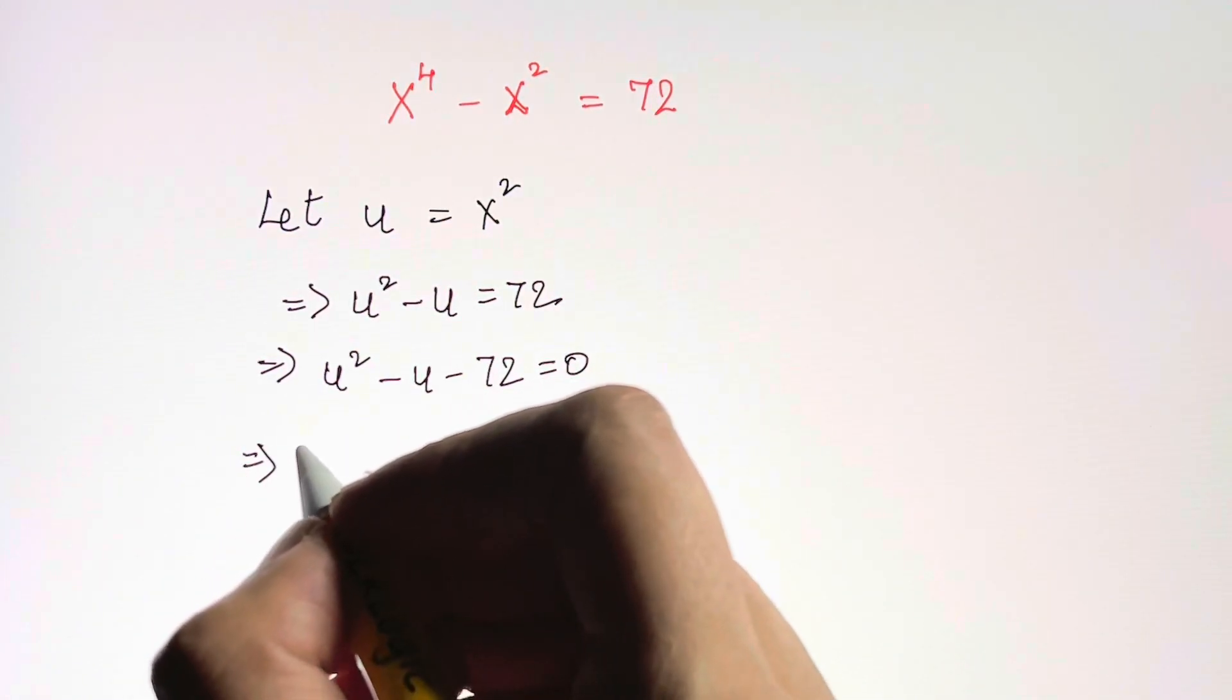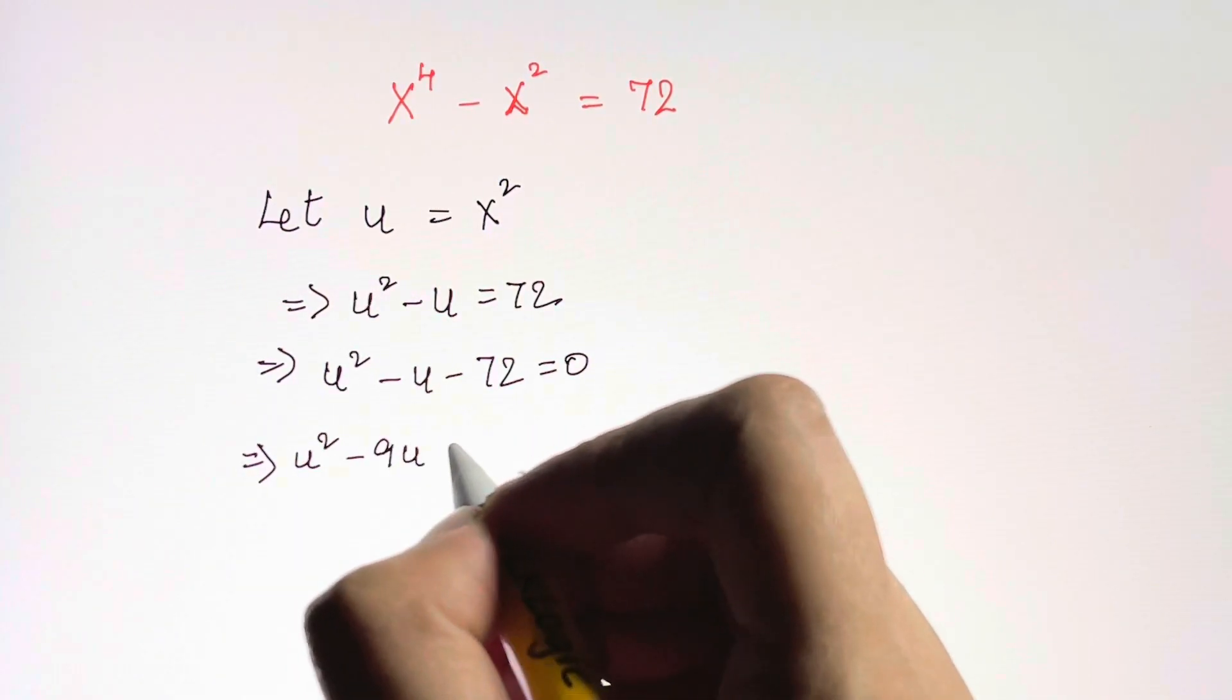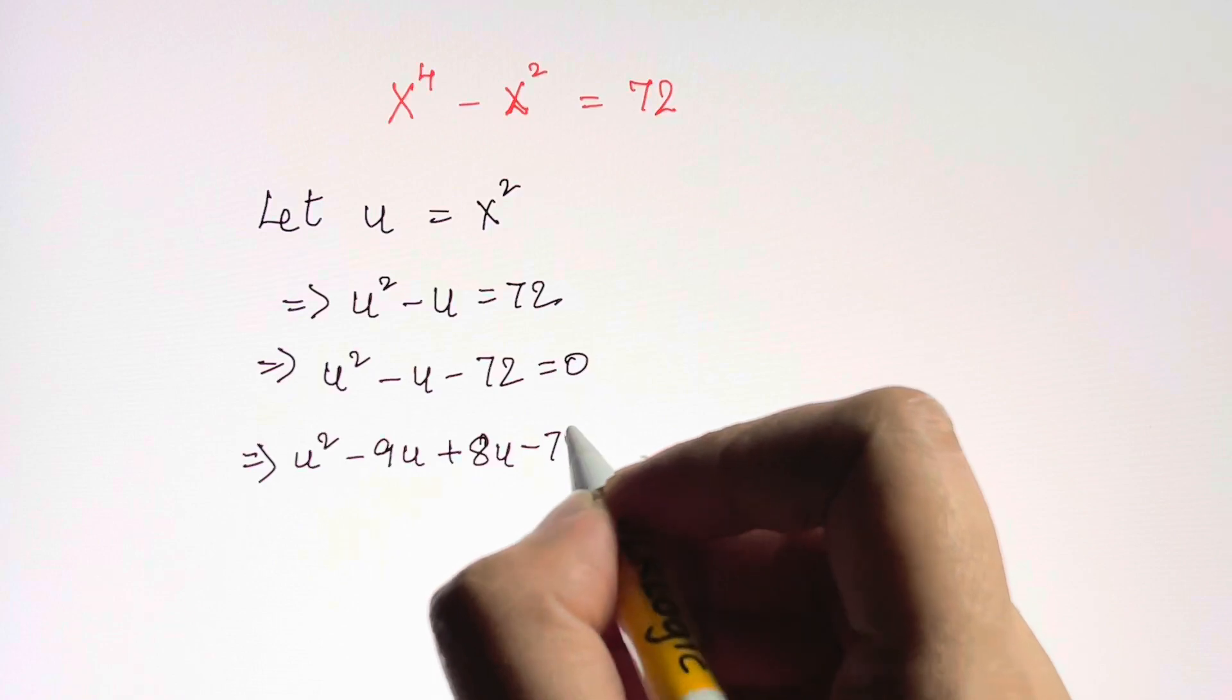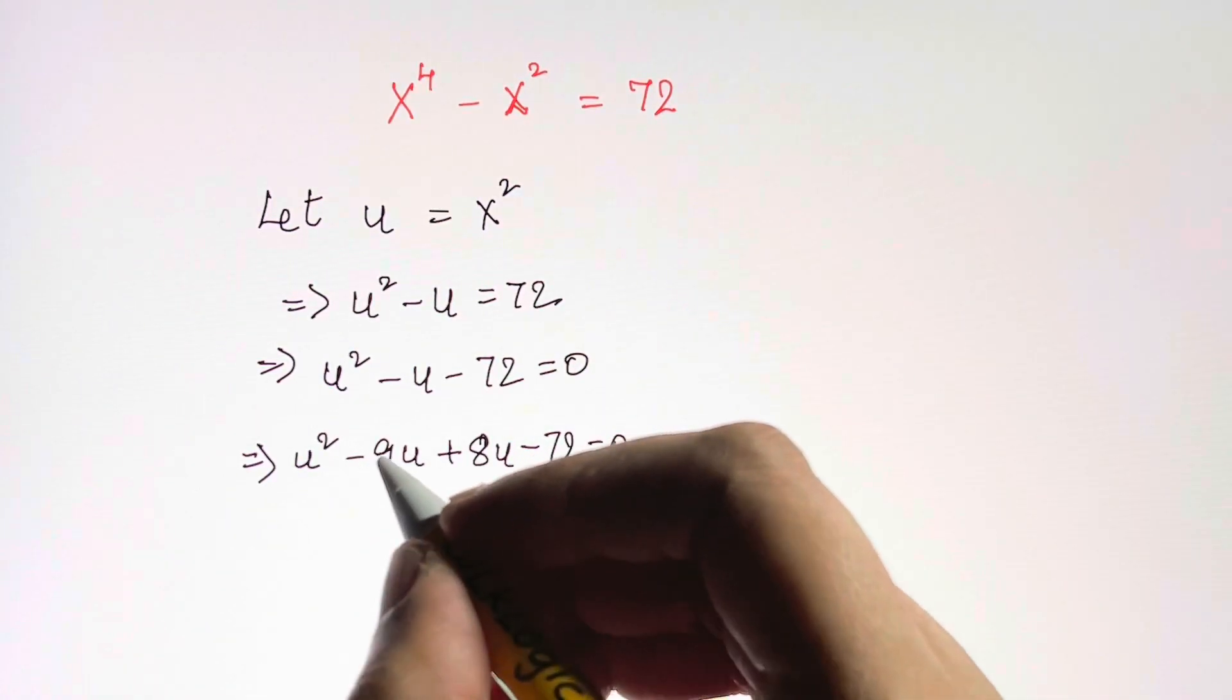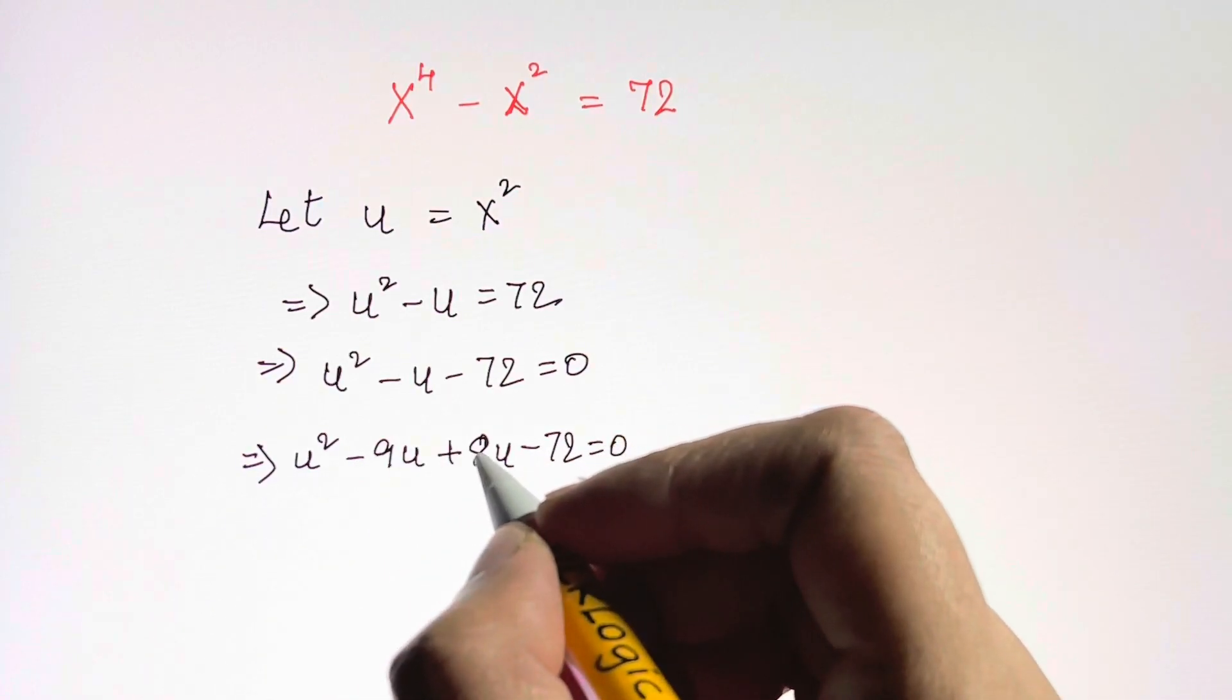So we're just going to put it as u squared minus 9u plus 8u minus 72 is equal to 0, because minus 9 and plus 8 will give you minus 1, and the product of minus 9 and plus 8 will give you minus 72.